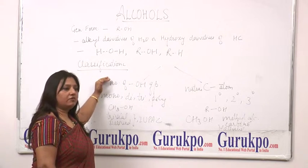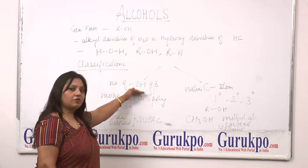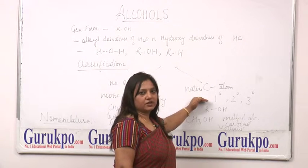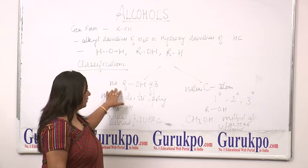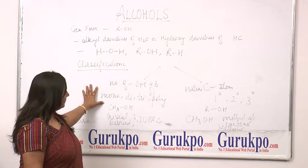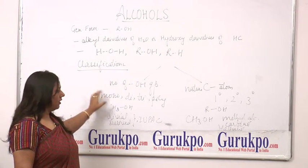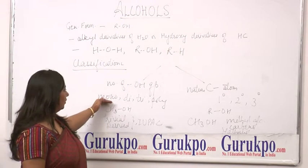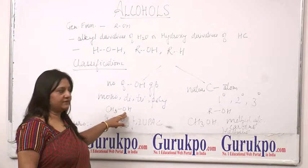Now, the classification. We can classify alcohols on two bases: first, depending upon the number of hydroxyl groups, and second, upon the nature of the carbon atoms to which they are attached. Taking the first basis — the number of hydroxyl groups — we consider them as monohydric, dihydric, or polyhydric compounds. For example, CH3OH is called a monohydric alcohol, because only a single OH group is present.